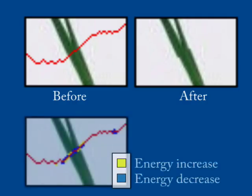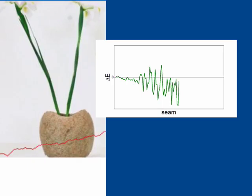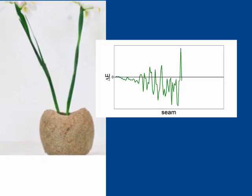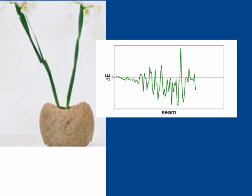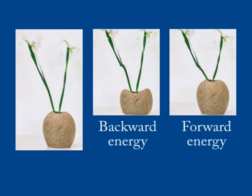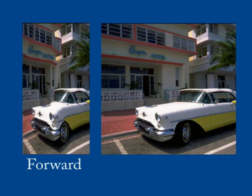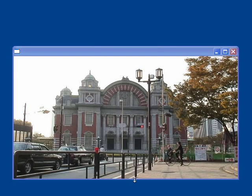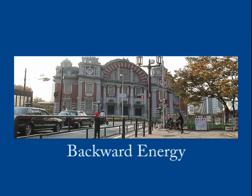By examining seam removal closely, we find that in some pixels the image energy is increased because new edges are created. We find that when removing some seams, more energy is inserted to the image than removed. In our new approach, instead of looking backwards, we look forward at image edges that are created when the seam is removed. We remove seams that insert the least amount of energy to the image after their removal.